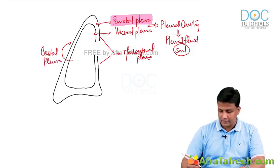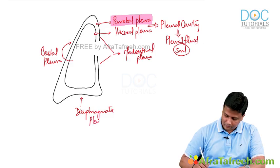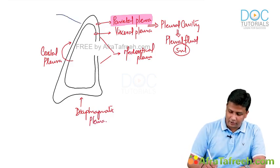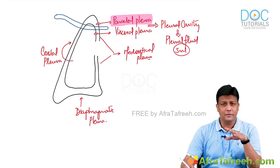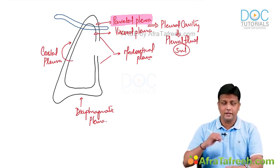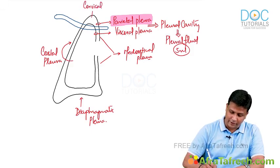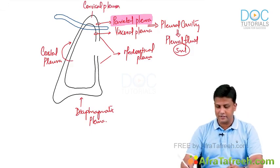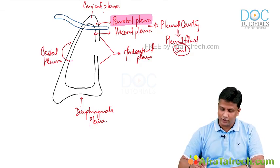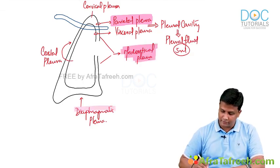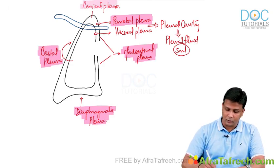The parietal pleura towards the diaphragm is the diaphragmatic pleura. Finally, just above the clavicle — projecting into the root of the neck, approximately 2.5 cm above the clavicle — is the cervical pleura. So the parietal pleura is divided into four types: mediastinal, diaphragmatic, costal, and cervical pleura.